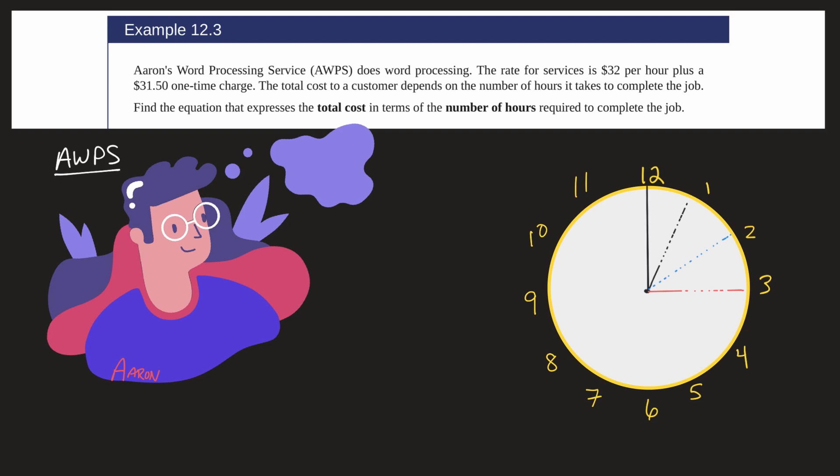So in his service, Aaron charges a $31 fee - $31.50 actually - just to basically show up. So if he agrees to the job, it's $31.50 just to start. So I'm going to put $31.50 up here at 12 o'clock.